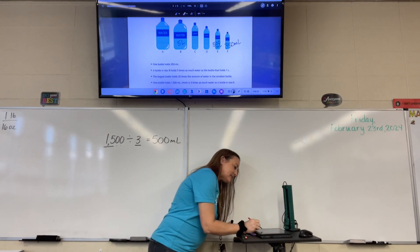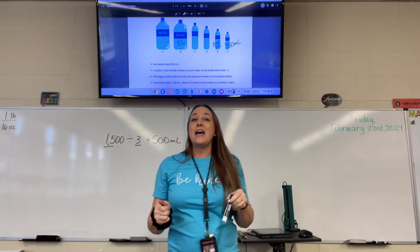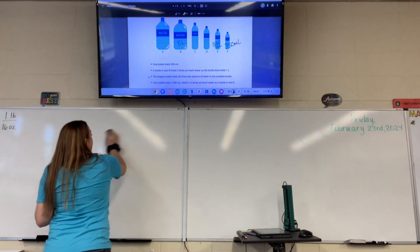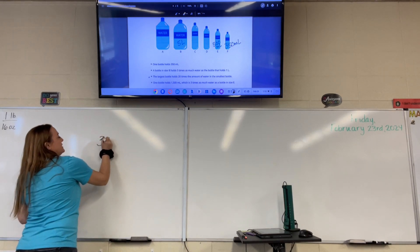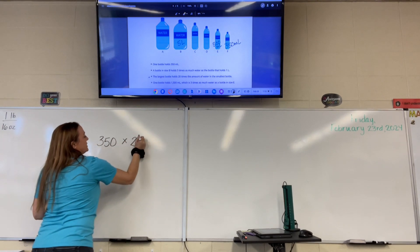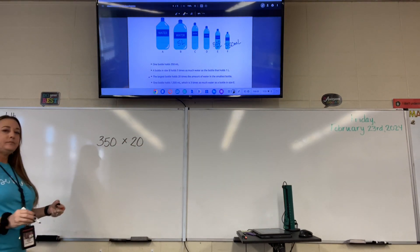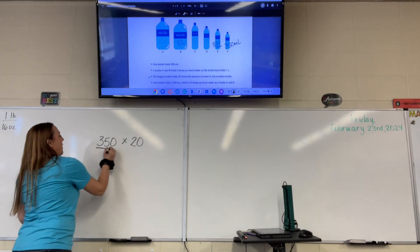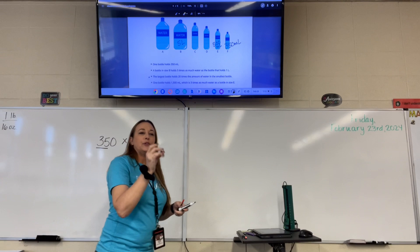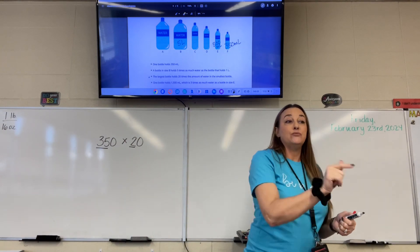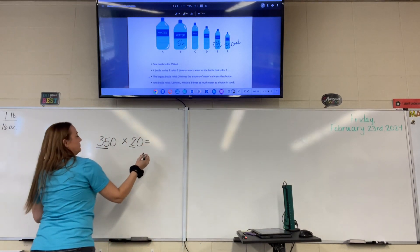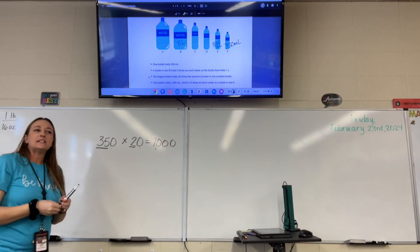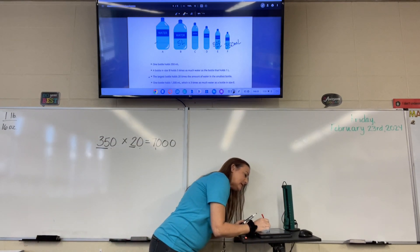Now it says the largest bottle holds 20 times the amount in the smallest bottle. We know the smallest is 350. So we multiply 350 times 20. What's our basic fact? 35 times 2. What is 35 times 2? 70. And how many zeros do we add on? Two. So the biggest bottle holds 7,000 milliliters.